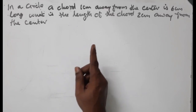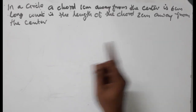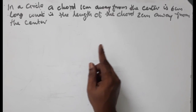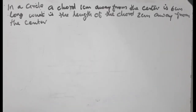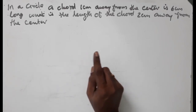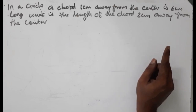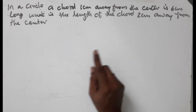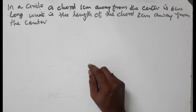In a circle, a chord 1 cm away from the center is 6 cm long. What is the length of the chord 2 cm away from the center? That is, 1 cm away — 6 cm long; 2 cm away — 8 cm long.